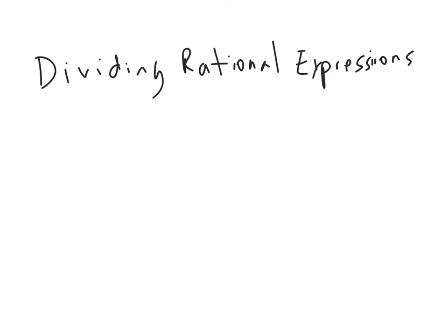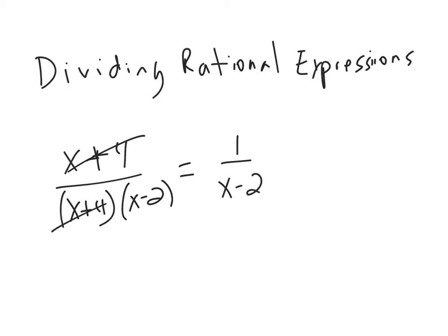So we had something like x plus 4 over (x plus 4) times (x minus 2). And these two guys would cancel out, and so we'd end up with 1 over (x minus 2). That's just simplifying a rational expression.